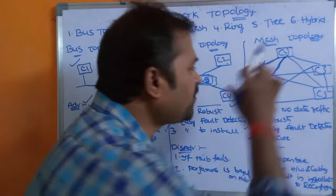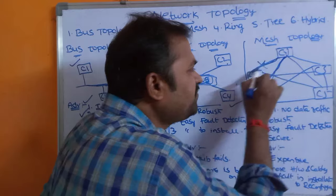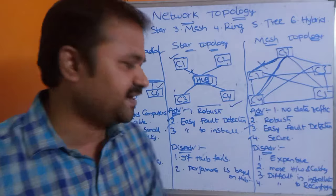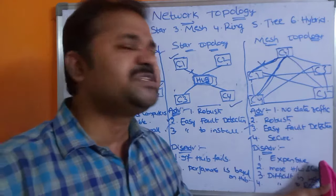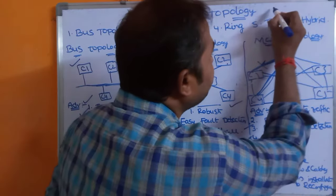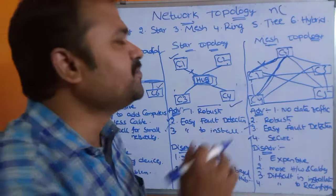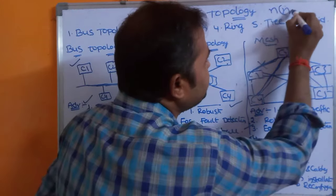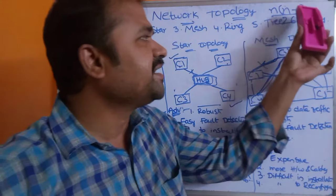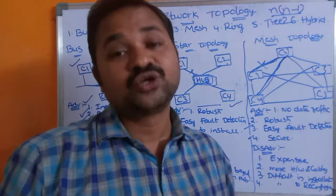Additional advantages of mesh topology: easy fault detection — any fault in a specific system can be detected easily. It is also very secure, because C1 can send data to C2 directly over a dedicated link and nobody else can intercept that data. The formula for required connections is n×(n−1)/2 — for 5 computers that is 5×4/2 = 10 links required.